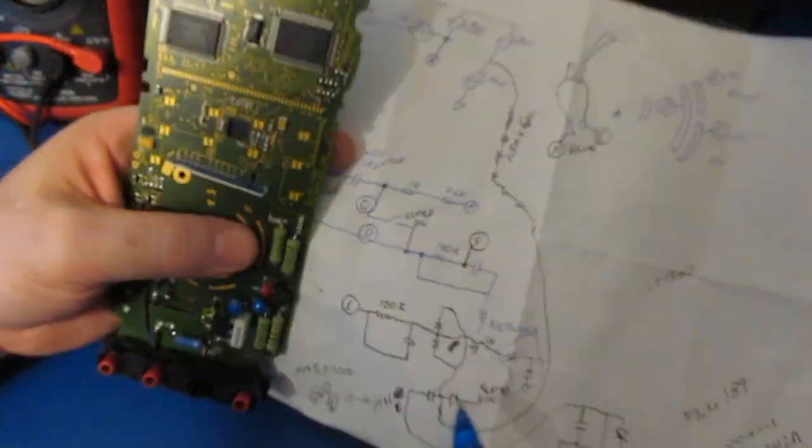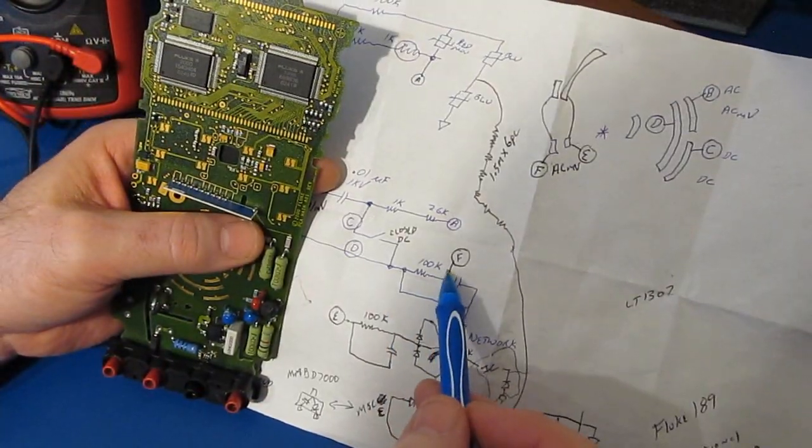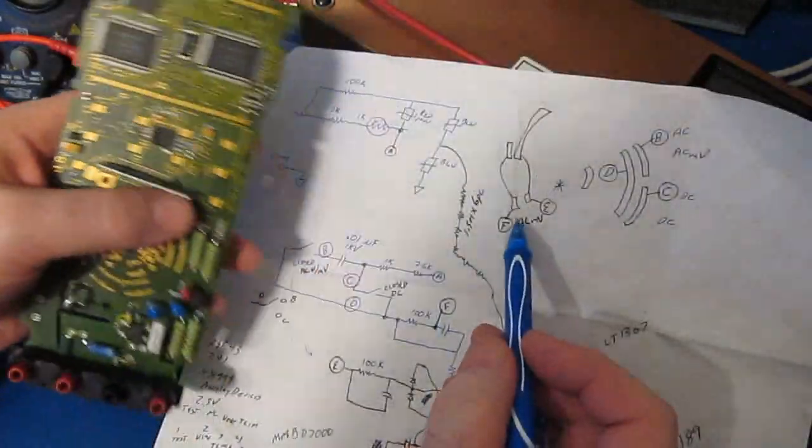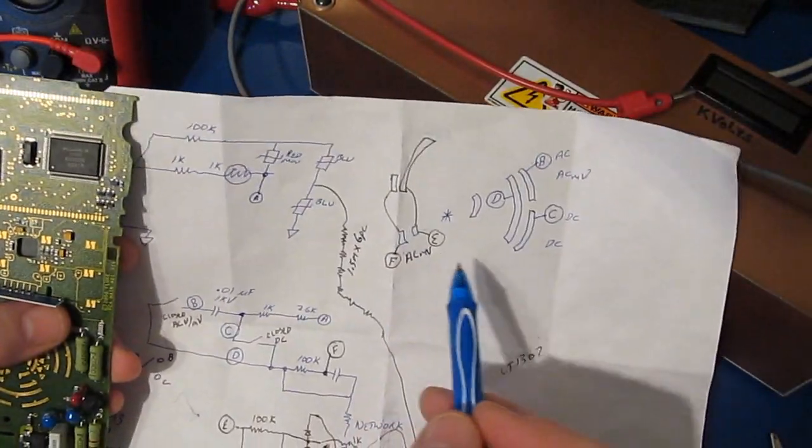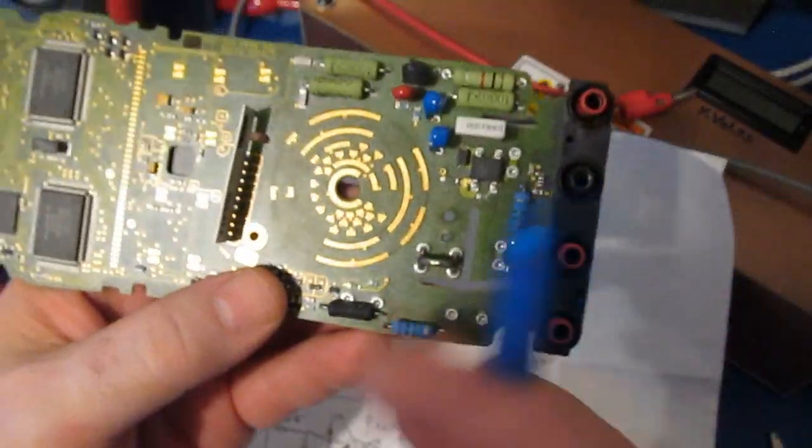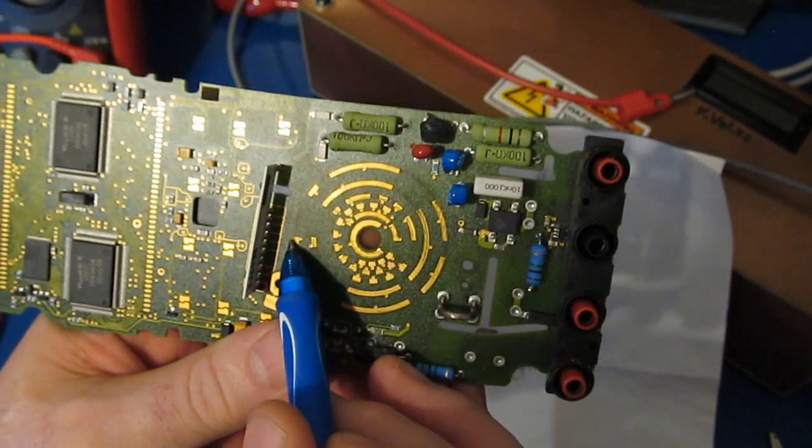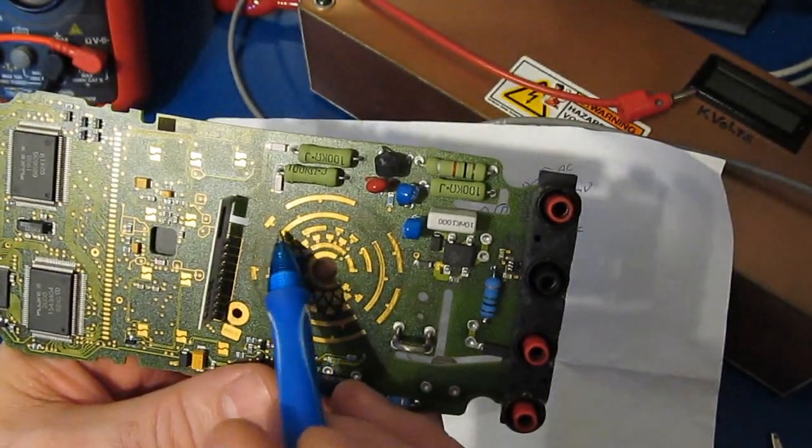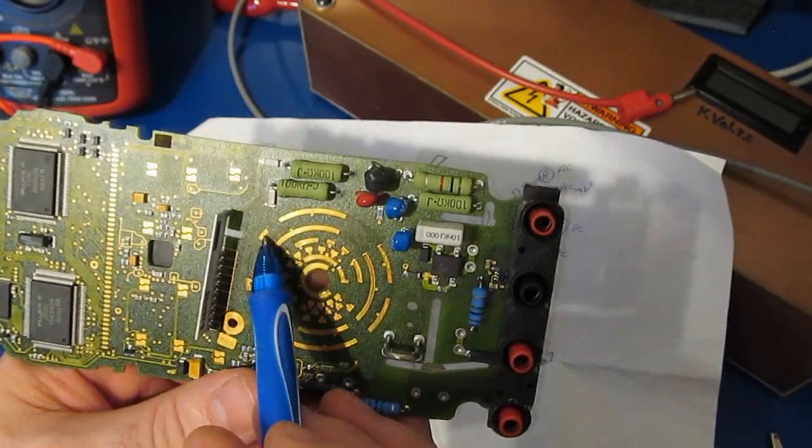If we look at the other side of the 100k, that goes to switch contact F. That is these two contacts here, which again if we're looking at the meter, we're talking about these two contacts here. This contact is connecting to this contact and this one connects to this one.